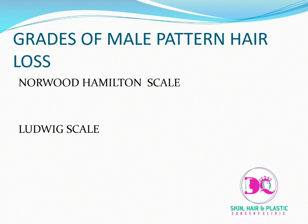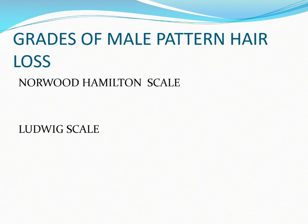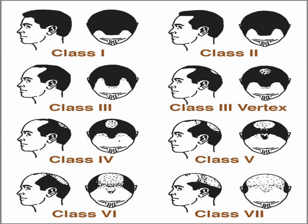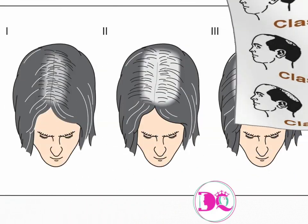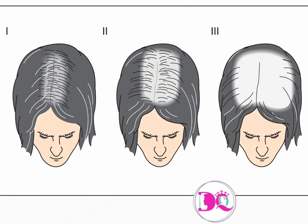So before starting treatment, we will categorize your baldness based on the Norwood-Hamilton scale or Ludwig scale. For males, it is classified from class 1 to class 7 according to the diagram. For females, there are three classes starting from the center at class 1 and going to the temporal region at class 3.